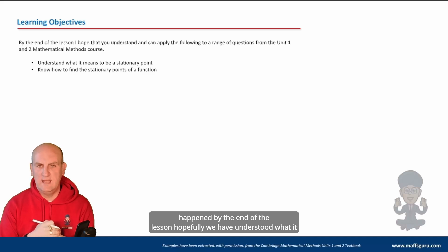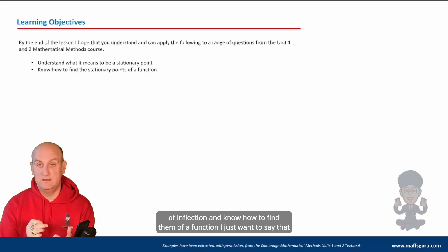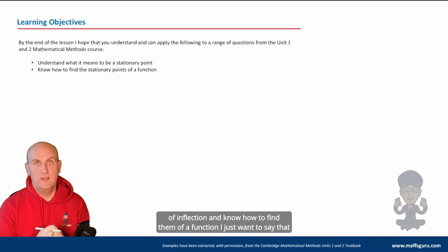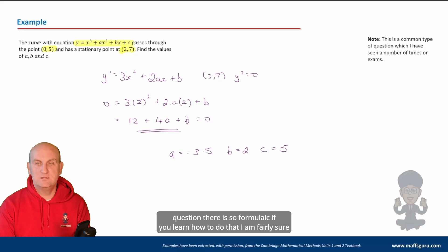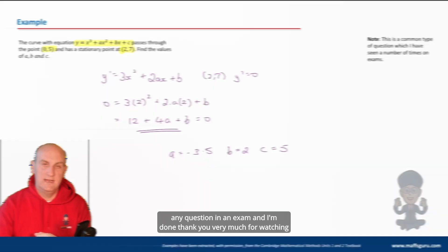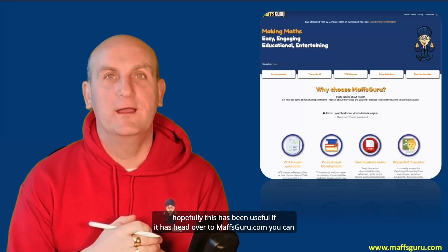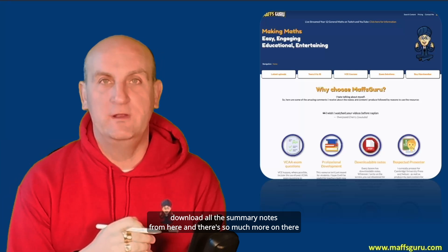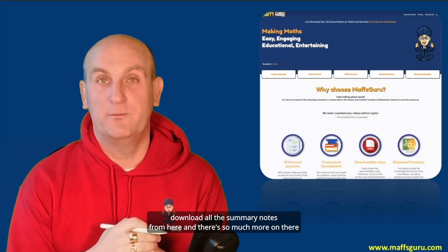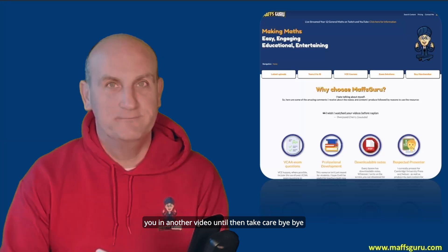By the end of the lesson we have understood what it means to be a stationary point — maximum, minimum, and stationary point of inflection — and know how to find them. That last question is so formulaic; if you learn how to do it by hand and with your calculator you should be able to smash pretty much any exam question. Head over to MathsGuru.com to download all the summary notes. Hopefully I'll see you in another video — take care, bye.